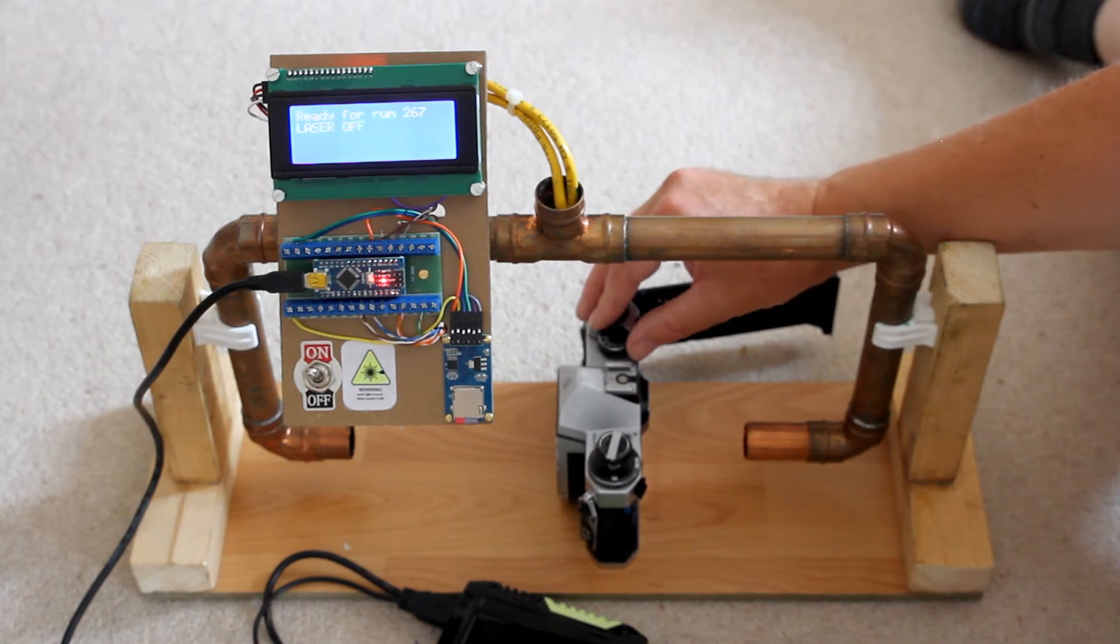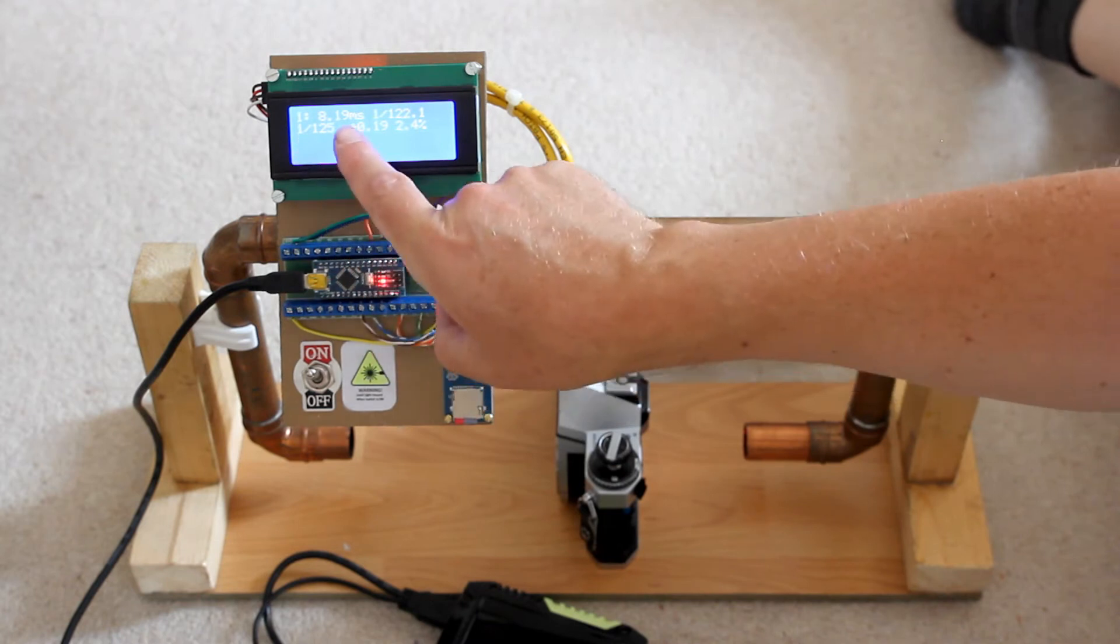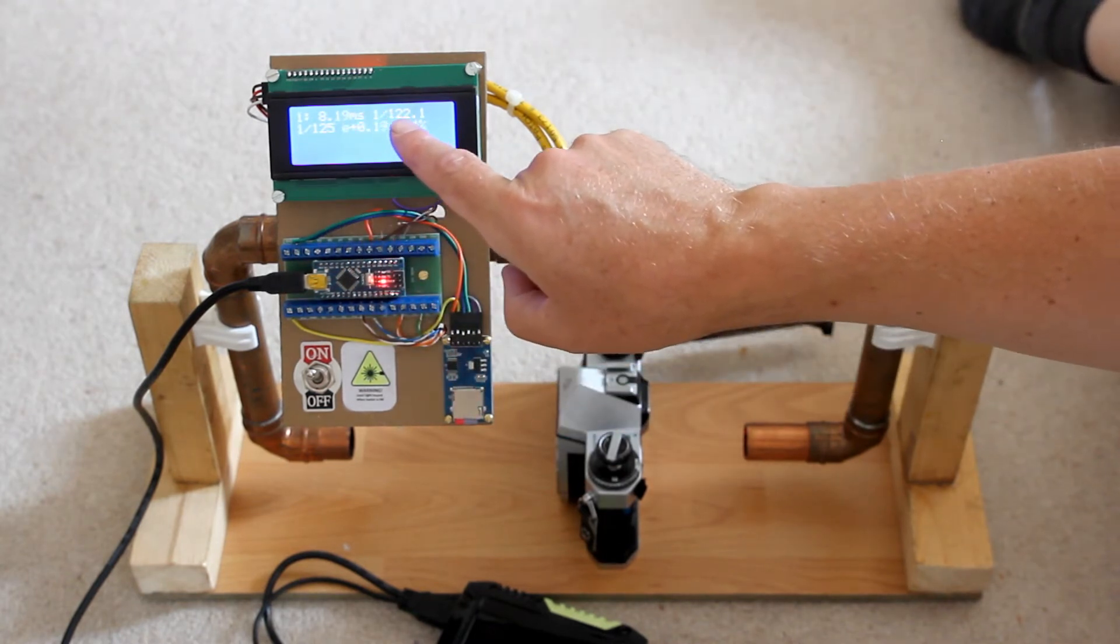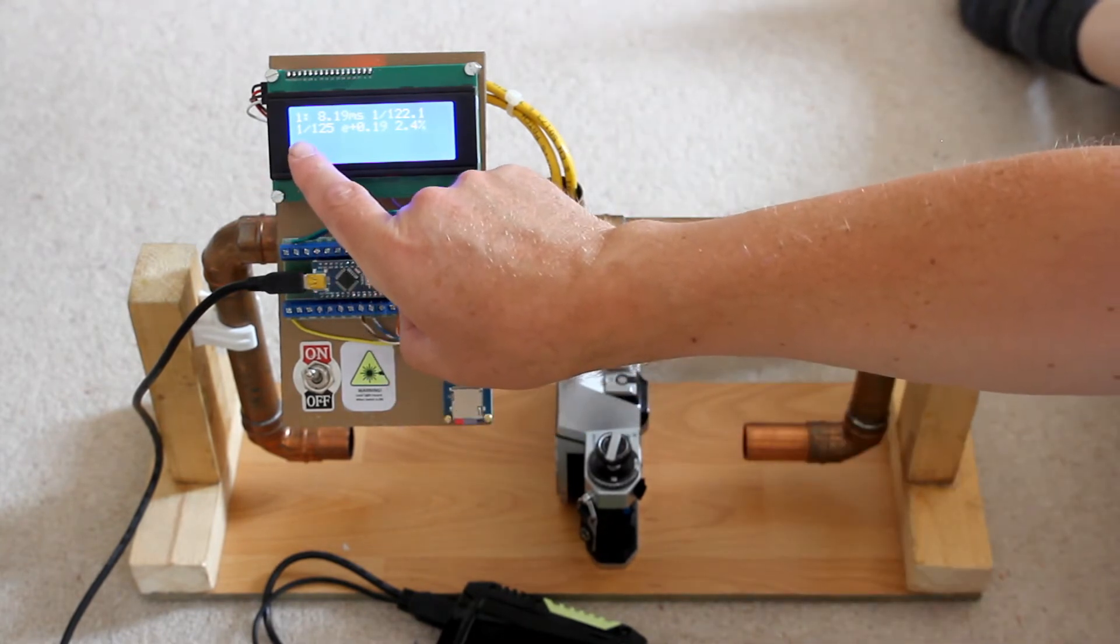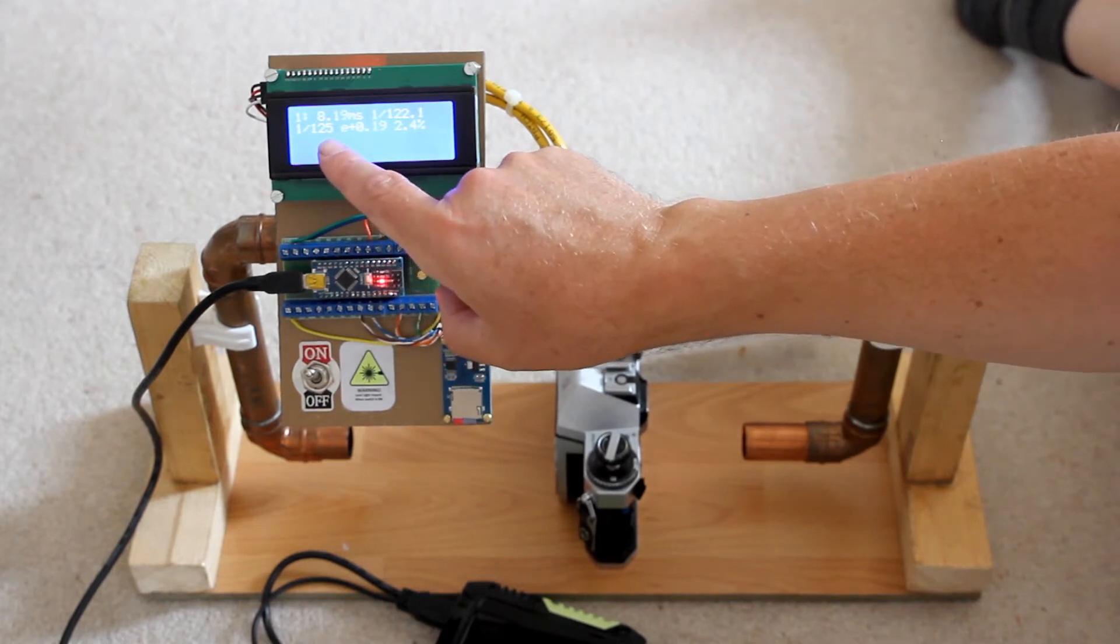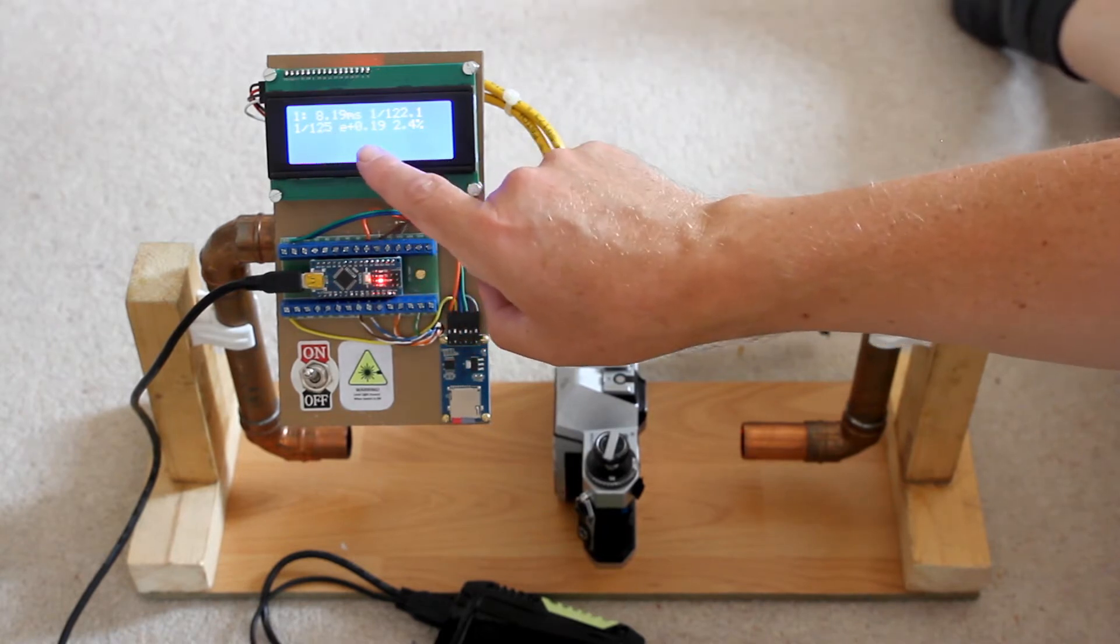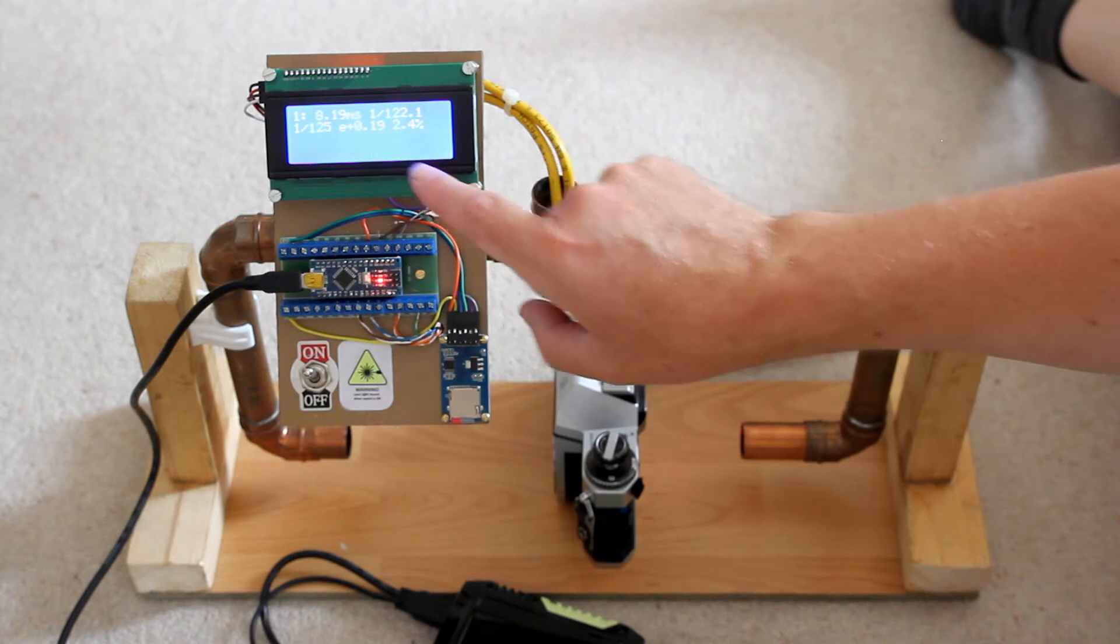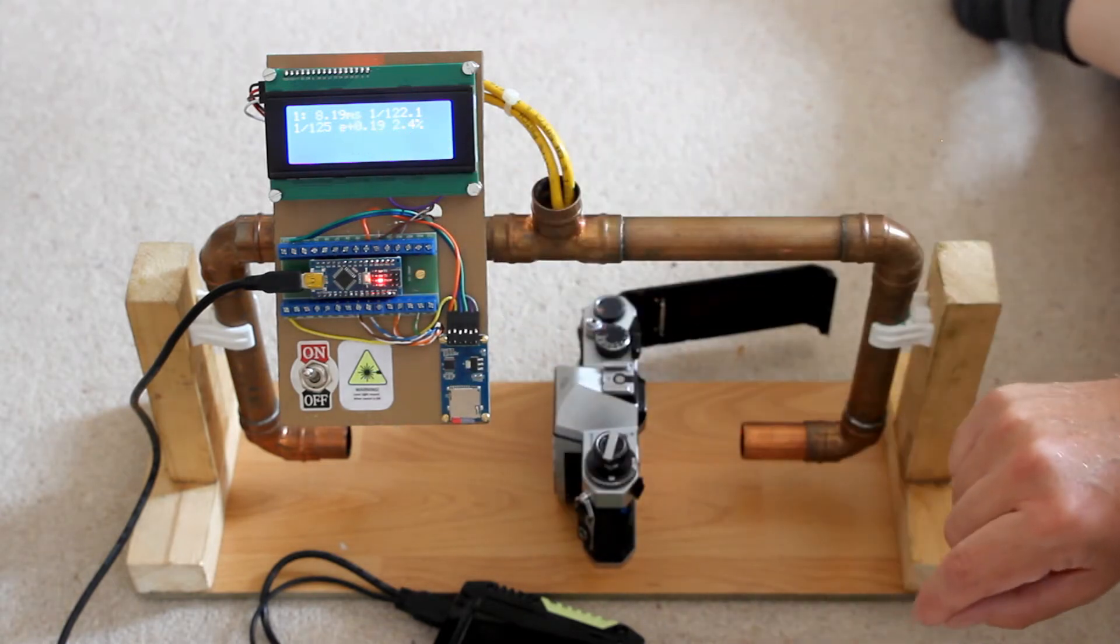So we'll just press the shutter and we've got our first reading. It's reading number one. It was 8.19 milliseconds which is actually one over 122 instead of one over 125. The software has identified that you're going for a 125th of a second. So it's recognized that this is what it should be, most likely speed. There is an error of 0.19 milliseconds and it's plus 0.19 milliseconds and you're out by 2.4 percent.